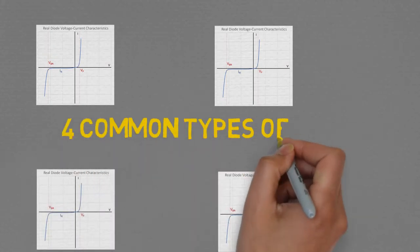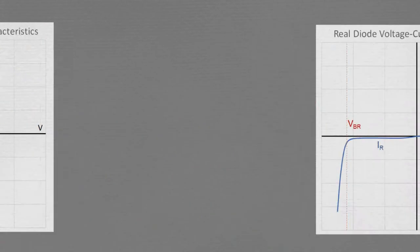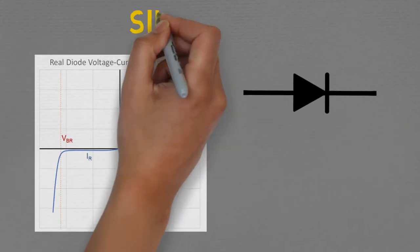The four common types of diodes. This is the symbol for the most common type, the silicon diode.